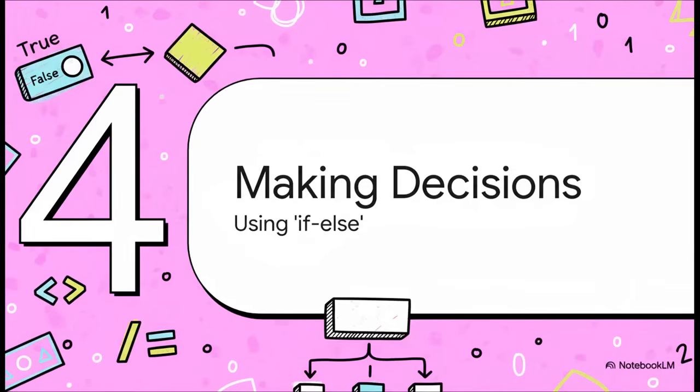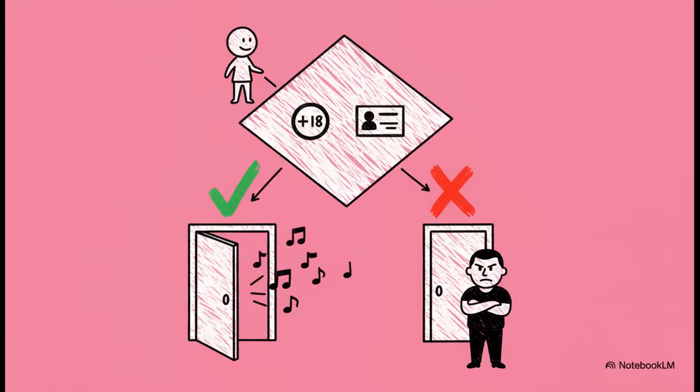Alright, this is the moment we've been building up to. This is the whole point. We've learned the computer's language, true and false. We've got the tools to ask questions, and we know how to connect those questions. Now, let's finally put it all together and tell the computer what to do with the answers it gets. So, I want you to imagine our code is a bouncer at a nightclub. The rules are super clear. You have to be 18 or older AND you gotta have your ID. So we use something called an IF-ELSE statement to write these rules.